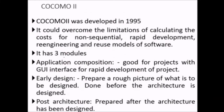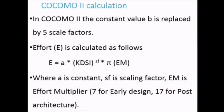COCOMO 2 was developed in 1995 to overcome the limitation of calculating cost for non-sequential, rapid development, re-engineering, and reuse software models. It has three modules: Application Composition (good for GUI-based rapid development projects), Early Design (a rough picture prepared before architecture is designed), and Post Architecture (prepared after the architecture has been designed).